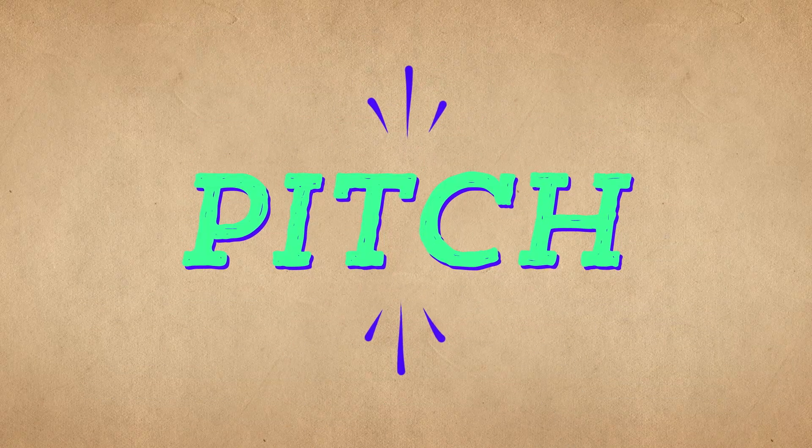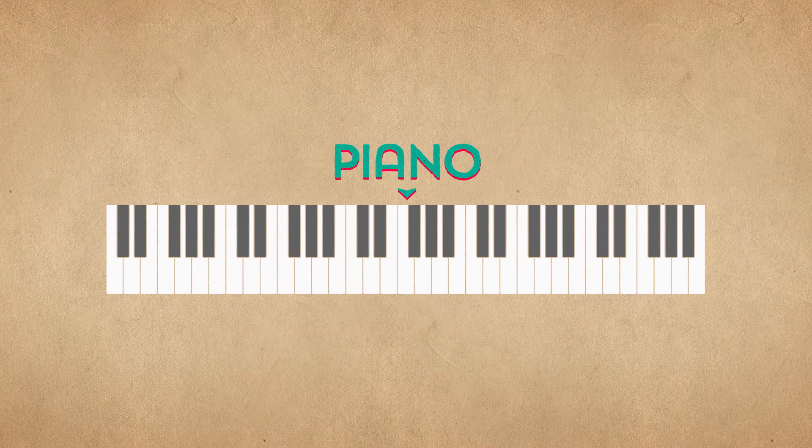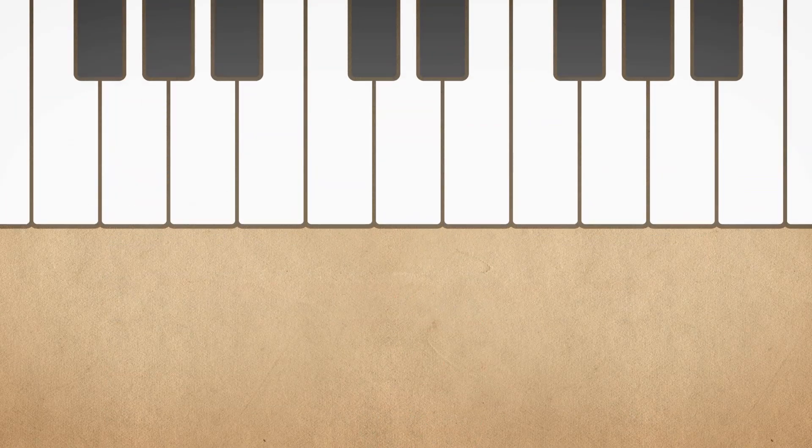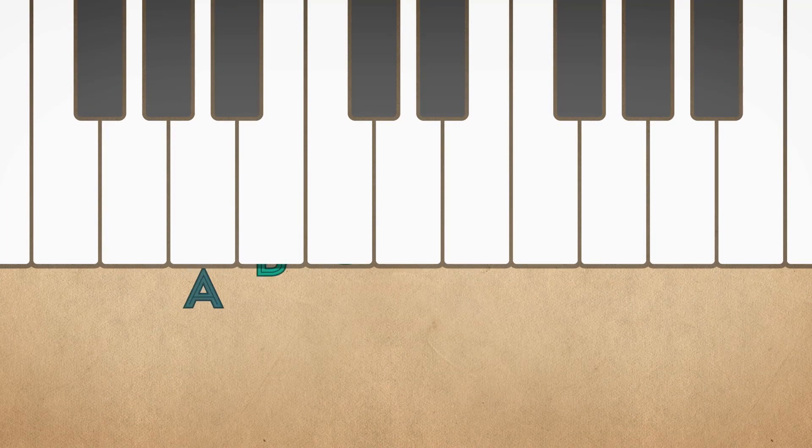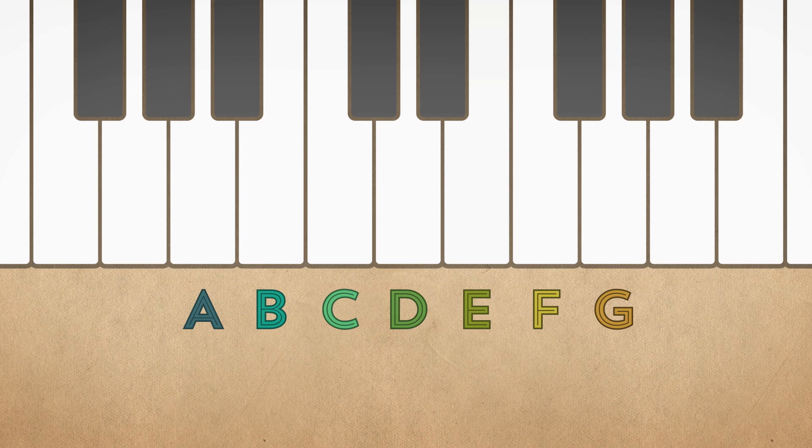Let's start with pitch. To help us out, we're going to use a piano, but this system works for pretty much any instrument you can think of. In the Western music tradition, pitches are named after the first seven letters of the alphabet – A, B, C, D, E, F, and G.